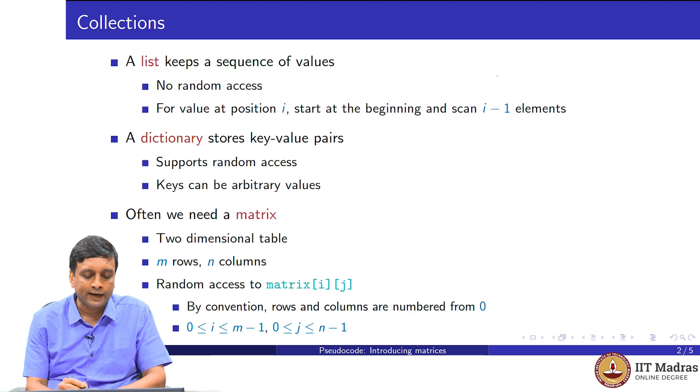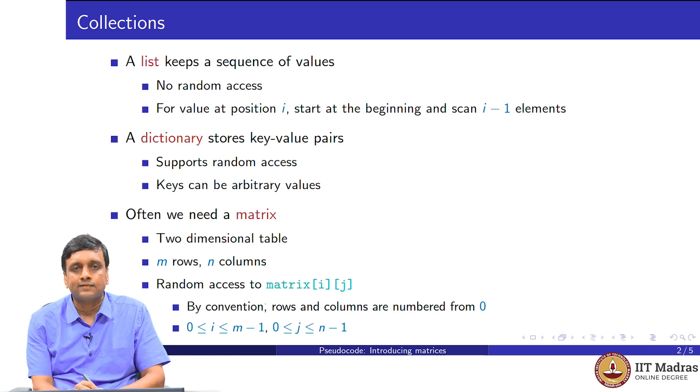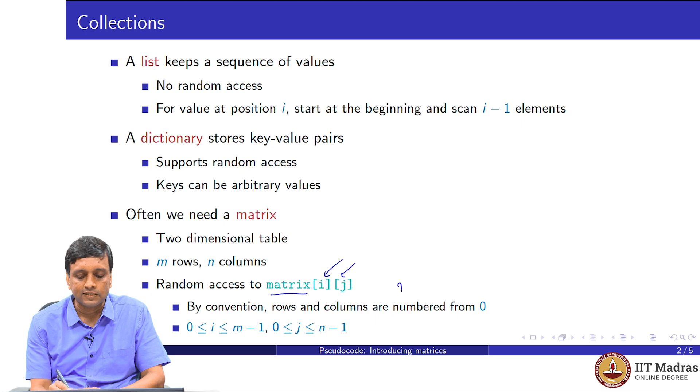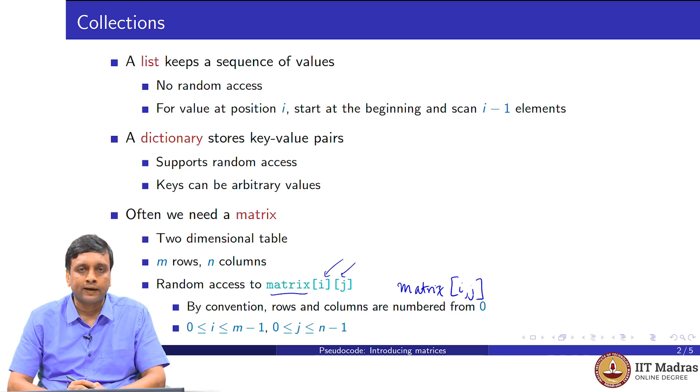We will use the square bracket notation. If matrix is the name of a variable which stores such a matrix, then to get the value at row i and column j, we will use this double square bracket. Notice that this is slightly different from maybe what you might intuitively think, which is to use a pair of indices within a single square bracket. We will use this double square bracket, which says that in matrix i, the row i, the jth element.